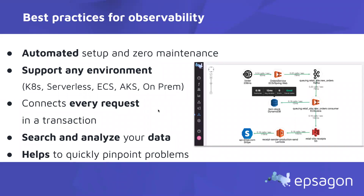You want that observability tool to support any environment. If you're going to switch between serverless, Kubernetes, ECS, AKS, Azure, GCP, or anything on-premise, you don't want to worry about changing how your code operates. Use a tracing tool that works on any environment, since companies often make these shifts. You also want to connect every request in a transaction — for example, a Lambda function putting a message on a database that triggers another Lambda function talking to a container. Have the ability to take that data and search and analyze it to gain business-related metrics and troubleshoot quickly.